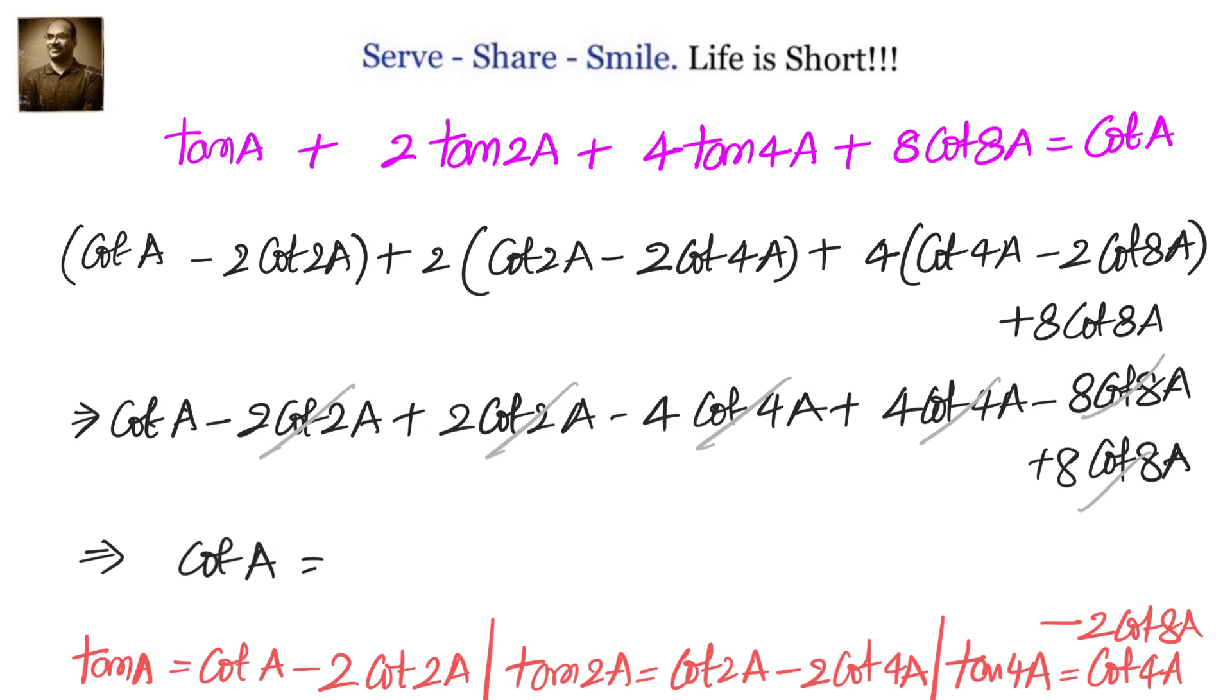So these type of problems look very complicated, but we have to be able to understand the relationship. If we are able to crack the relationship, how we can go from one level to the next level, then it becomes very easy. So that's the solution for tan a plus 2 tan 2a plus 4 tan 4a plus 8 cot 8a. We've shown that equals cot a.